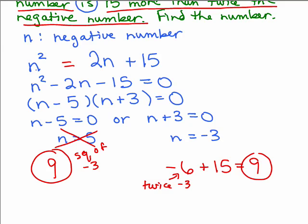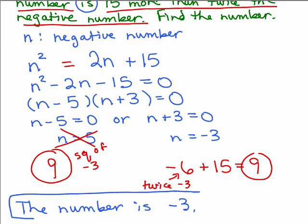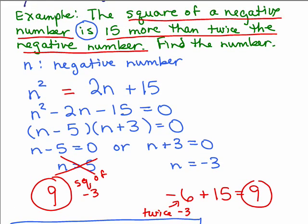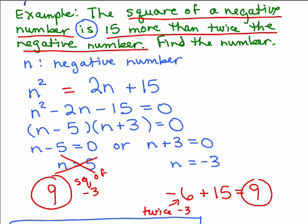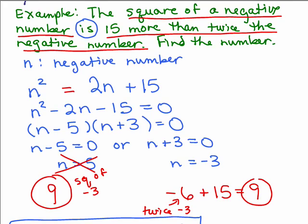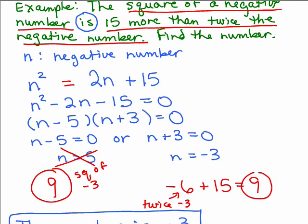Notice I didn't go back and plug it back into the equation, because I might have written the wrong equation. I want to make sure it makes sense in my words. So then we have to write this answer, the number is negative 3. Remember, you wouldn't write n equals negative 3, look at the problem. They don't talk about an n. It says, find the number. You've got to tell them what the number is. It's an English problem and you answer in English.